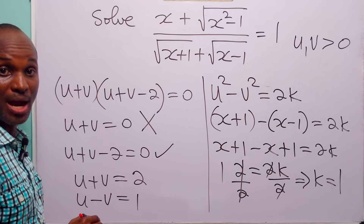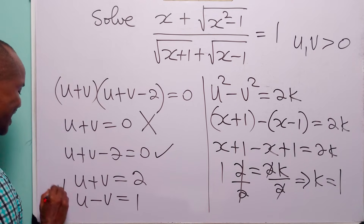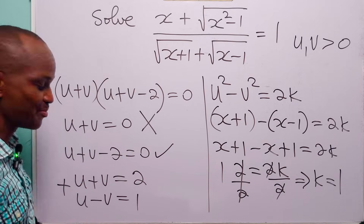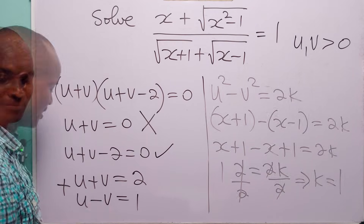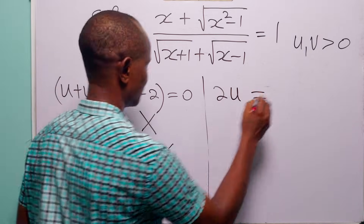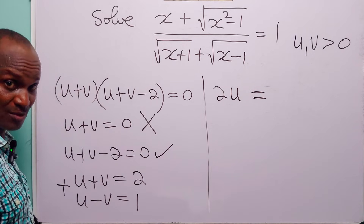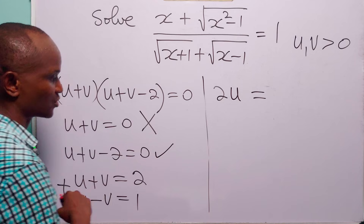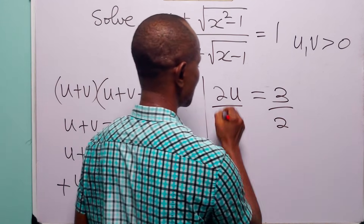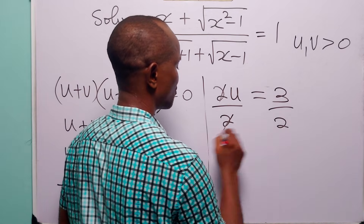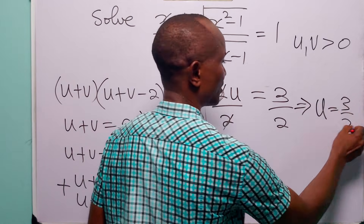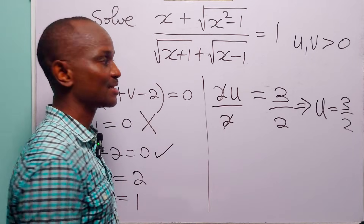So u minus v equals 1. Adding this to u plus v equals 2, we eliminate v: 2u equals 3, so dividing both sides by 2, u equals 3 over 2.